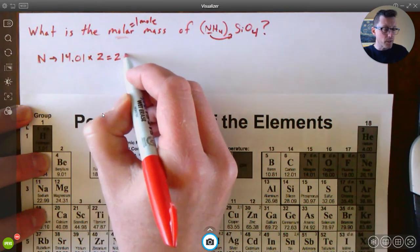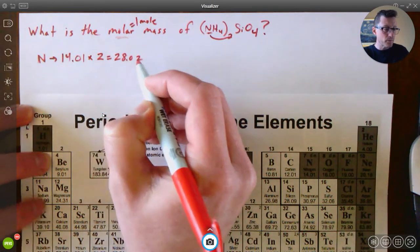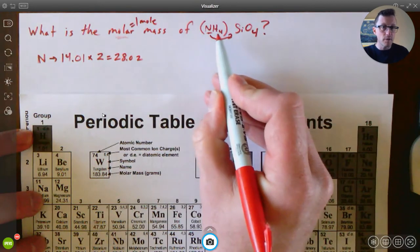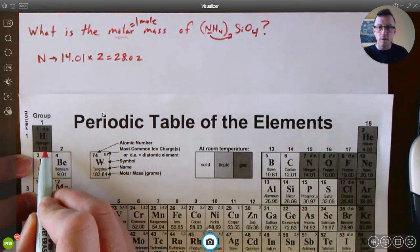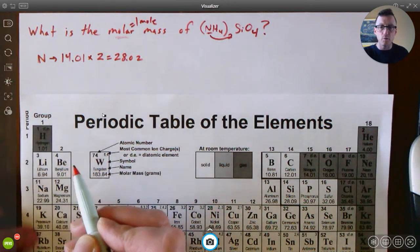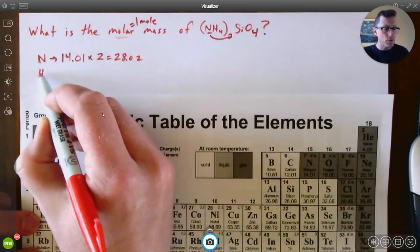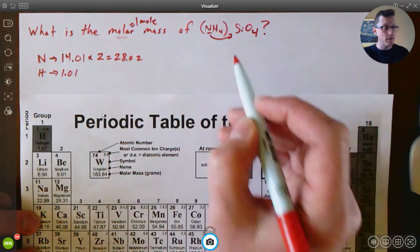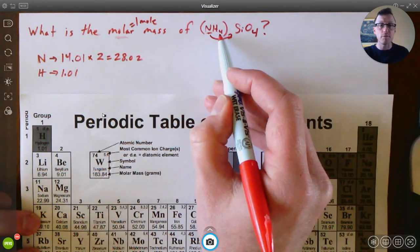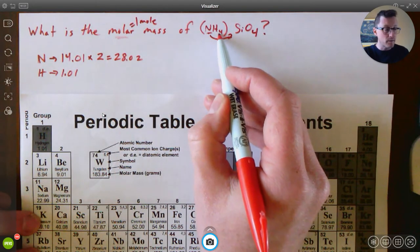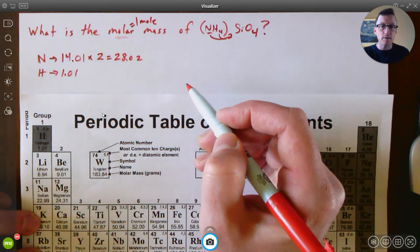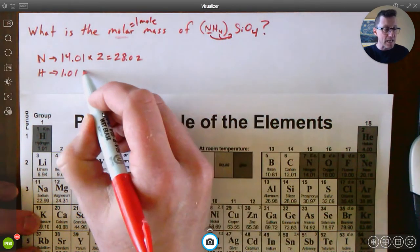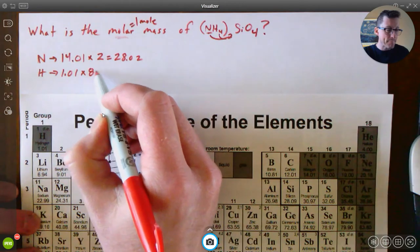Okay, do the same thing for H. Find H - it's number one on the periodic table. 1.01 is the mass for an H. But how many H's do I have here? I have a subscript of four, and that's a multiplier for the subscript on the outside. So four times two is eight. Multiply all that out, I get 8.08.